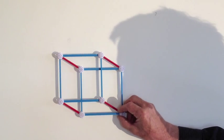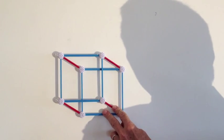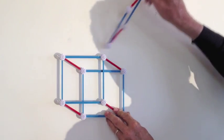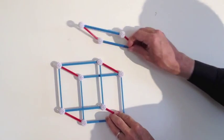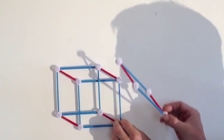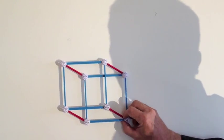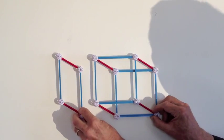Now, a flatlander might object and say, well, this isn't really a square, right? And likewise, the other one, this other kind of distorted version is not a square.